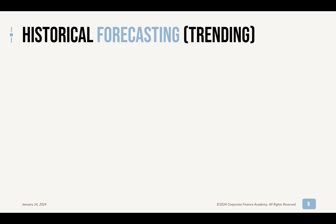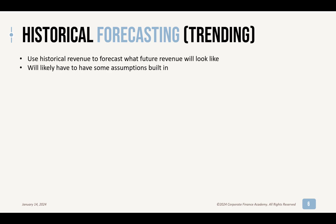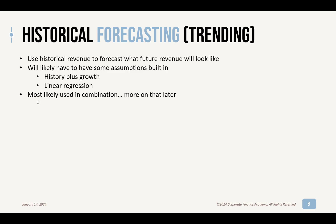Historical forecasting, or trending — a trend forecast — uses historical revenue to forecast what your future revenue will look like, and more importantly, probably volumes. It's going to have some assumptions built into it, something like your history plus growth. So if you did a million last year and you're expecting to grow 3%, that's a million plus 3%. It may also be more of a straight linear regression, straight trend lines. Most likely this is going to be used in combination with another model.